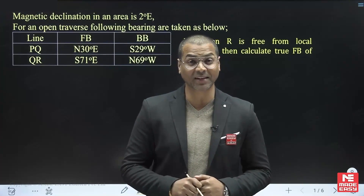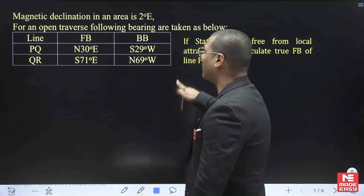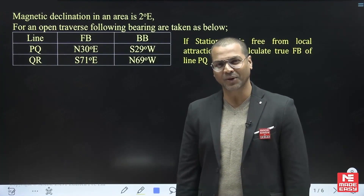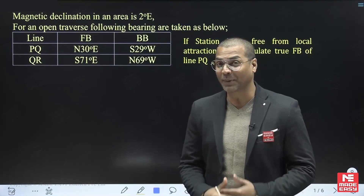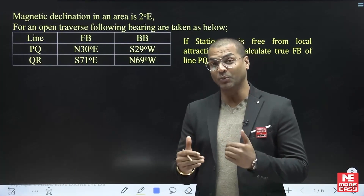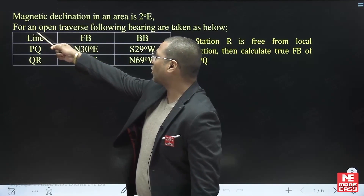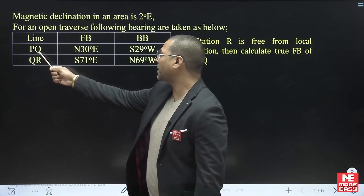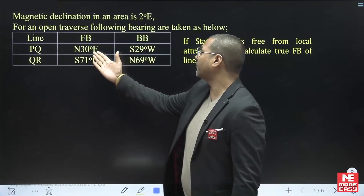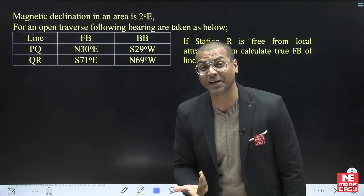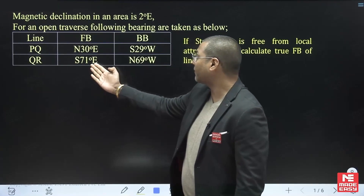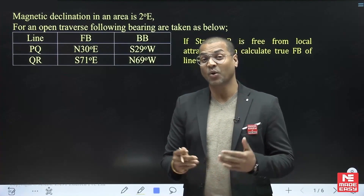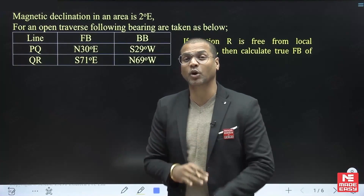Here, the magnetic declination in the area is given as two degrees east, so we can apply that correction directly. But if you read the question carefully, for an open traverse, the bearings are given in a table. For line PQ, the forebearing and back bearing are not making a 180° difference. Similarly, for line QR, the forebearing and back bearing again do not make a 180° difference, so there is some local attraction present.